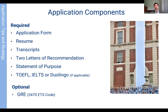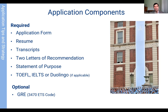The application components include: an application form, resume, transcripts — unofficial transcripts are accepted — two letters of recommendation, and a statement of purpose. If applicable, a standardized English test such as TOEFL, IELTS, or Duolingo is required. Finally, the GRE is completely optional. If you submit it, it will be part of the holistic review. The ETS code for Columbia Climate School is included if you wish to submit GRE scores.